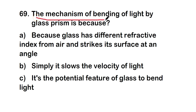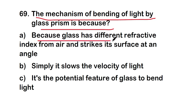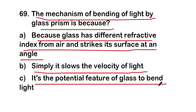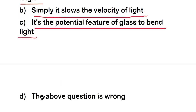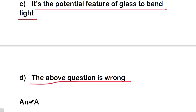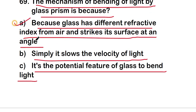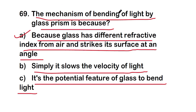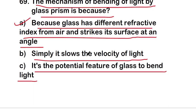Next question: the mechanism of bending of light by a glass prism is because — glass has a different refractive index from air and strikes its surface at an angle; it simply slows the velocity of light; it is a potential feature of glass to bend light; or the question is wrong. The right answer is option A — because glass has a different refractive index from air and strikes its surface at an angle.